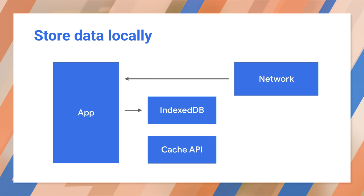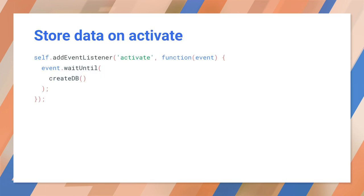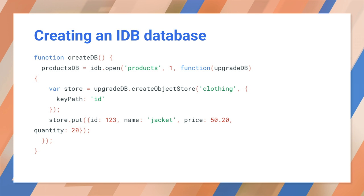So here we're using the cache API and client-side data storage. Let's look at storing JSON data locally. The activate event is a good place to begin. Here we create a products store version 1. Inside the products data store, we create a clothing object store, which will hold all of the clothing objects. The clothing object store is identified by ID value, meaning the objects in this store will be organized and accessed by the ID property of the clothing objects.